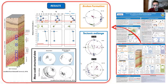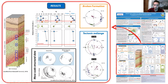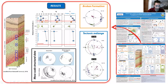In the tectonic melange close to the main thrust fold, I observed a shear-related fabric with magnetic lineation consistent with the shear direction of the North Apenninian thrusting stage. But away from the thrust,